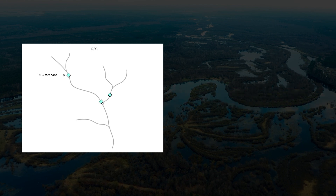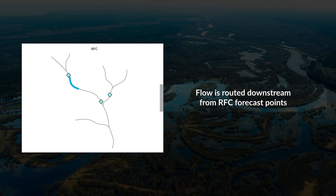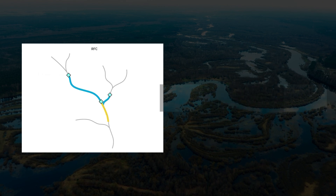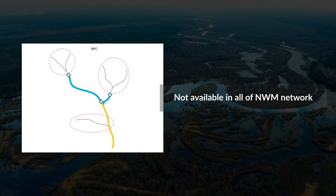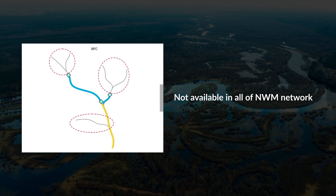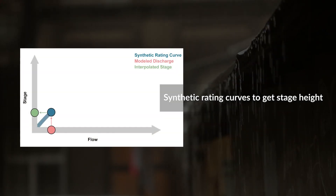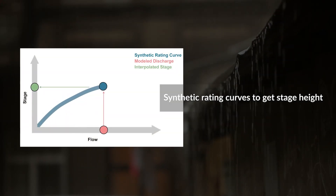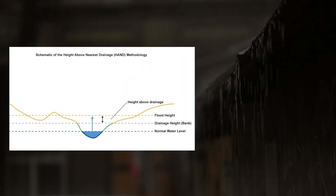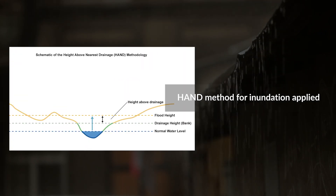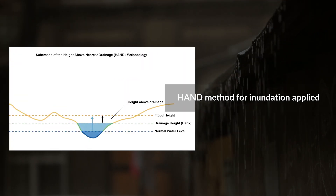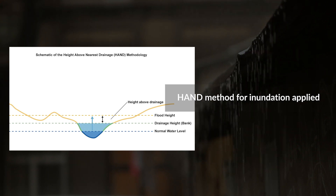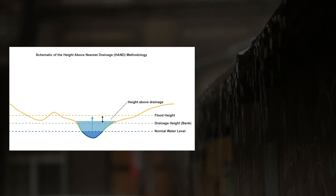The RFC flow forecasts are then routed downstream from the forecast points. Note that parts of the NWM reach network have no flow forecasts by the RFC. The routed flow is converted to stage height using synthetic rating curves, and the Height Above Nearest Drainage method, or HAND, is applied to generate the aerial extent of flooding. This process is similar to that used for the NWM FEM.